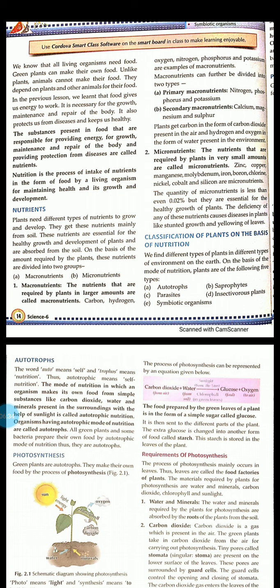Now the question is, from where does the environment get water? In the form of vapor. The second type is micronutrients. The nutrients that are required by plants in a very small amount are called micronutrients. Their quantity is 0.02%. But they are essential for the healthy growth of plants.